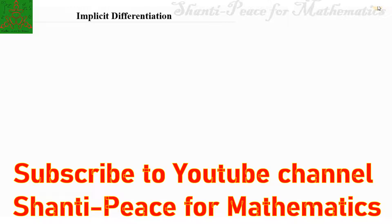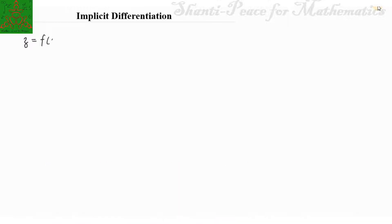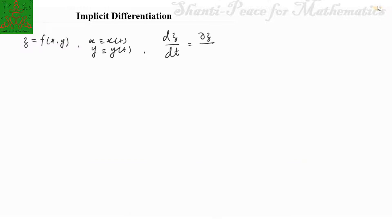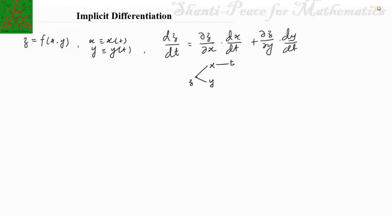Welcome to Santhi Peace for Mathematics. In my previous videos, we have talked about the chain rule for partial derivatives. In that, we have seen that if you have a function z which is a function of x and y, and if x is a function of t and y is also a function of t, then the differentiation of z with respect to t is given by the formula: dz/dt = (∂z/∂x)(dx/dt) + (∂z/∂y)(dy/dt). This can be seen by a tree diagram where z is a function of x and y, and x and y are functions of t.